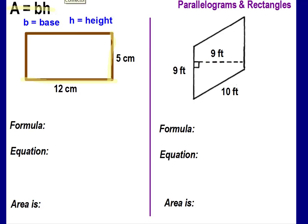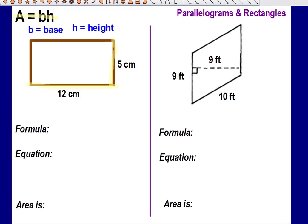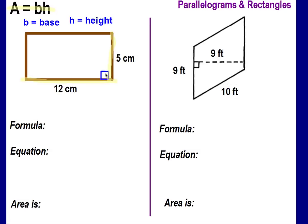One important thing to know when looking for the height is that the height is going to be perpendicular to the base. It's those two lines that make a right angle. It's perpendicular to the base and makes that right angle. Once you have identified your base and your height, you're ready to work with your formula.